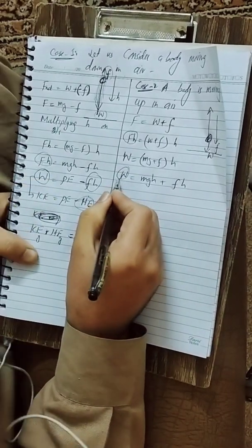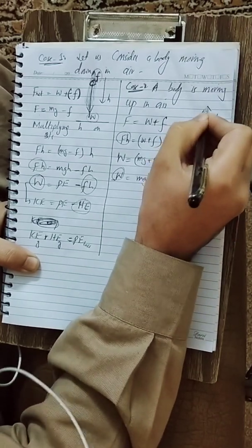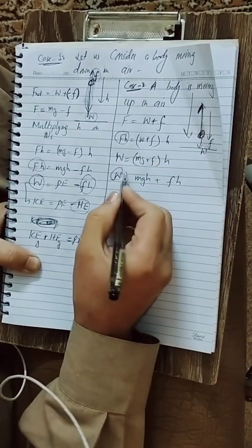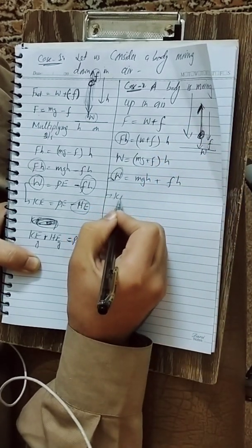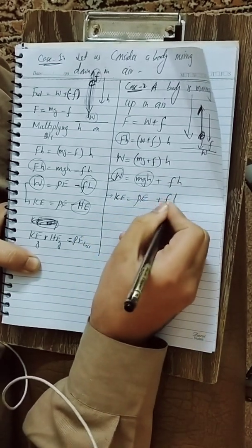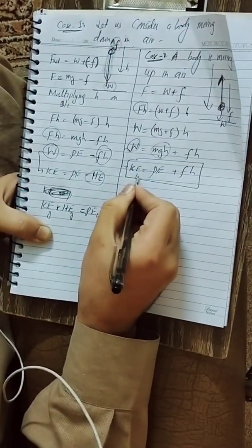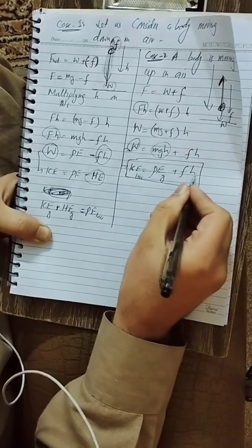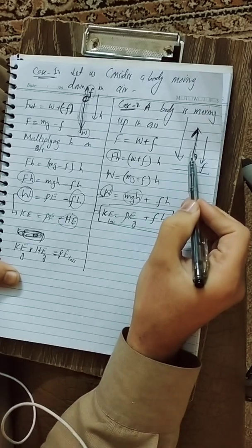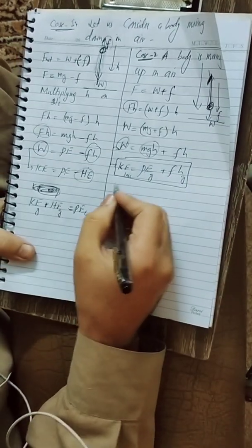The work done F·H is the work done against friction, which is the kinetic energy. Mg·H is potential energy and f·H is heat energy. So kinetic energy loss equals potential energy gain plus heat energy gain. When the body moves up, its kinetic energy is converted into two forms: potential energy and heat energy. This is Case 2.